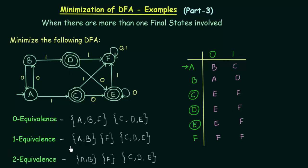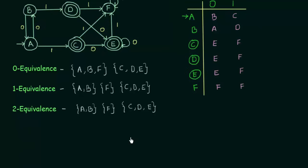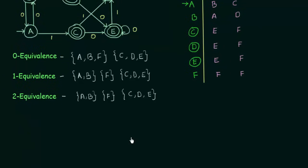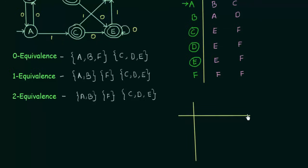If you look carefully, you find that the row of one equivalence and two equivalence are exactly the same. That means it is time to end the process — you have got your new states for the minimized DFA. So what will be my new states? The first state will be AB, the second state will be F, and the last state will be CDE. Let me draw the state transition table for this new minimized DFA.